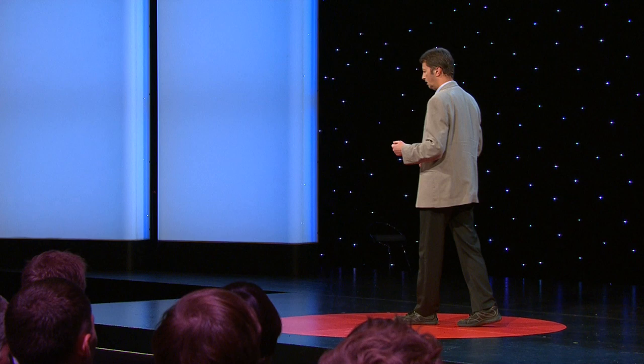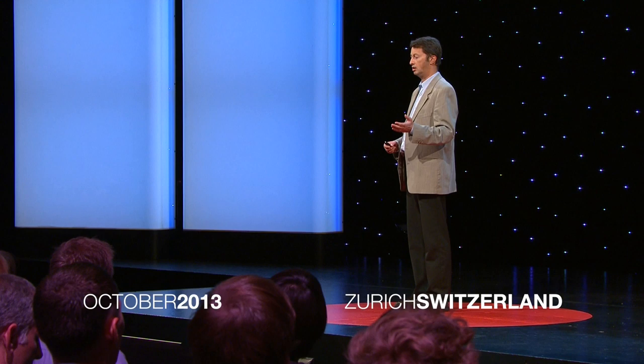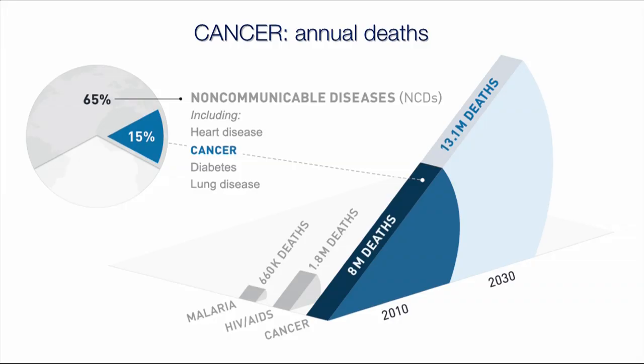We all know that cancer is a very scary disease — actually, it's a devastating disease. There will be this year over 8 million people dying from cancer worldwide. A report from the National Cancer Institute in the USA predicts that 1.6 million people this year alone will be new patients diagnosed with cancer. One of the problems with cancer is that it's not one single disease — it's a class of disease. It can affect different organs and even spread from one organ to another.